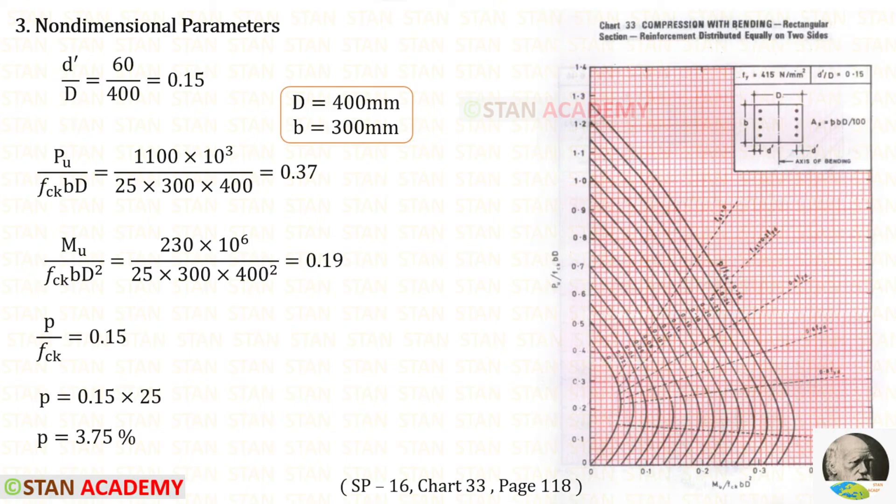From the chart, we can write these two terms. In these two terms, we can apply all of the values. In the question, it is given that the load and moment act in the major axis. Suppose they act in the minor axis, in these two formulas, 300 mm should be applied as D and 400 mm should be applied as B.